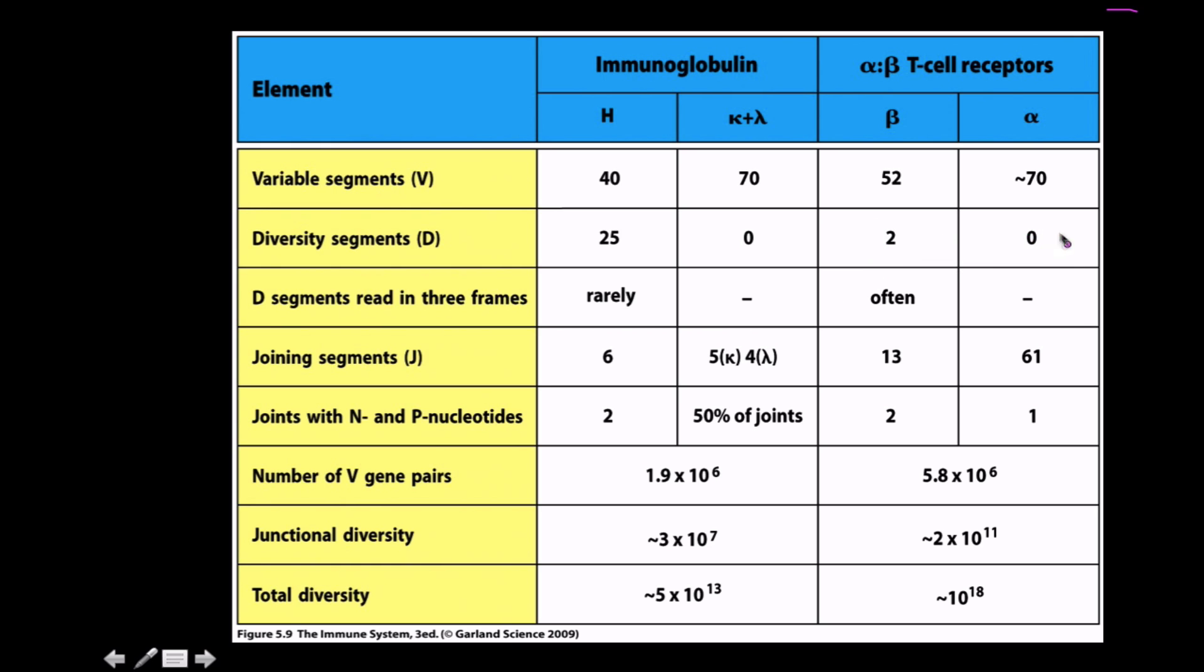Obviously there isn't any in the alpha because it's homologous to the light chain. D segments being read in three frames - this is very rarely done here, but we'll talk about this later with B chains having these segments read in three frames.